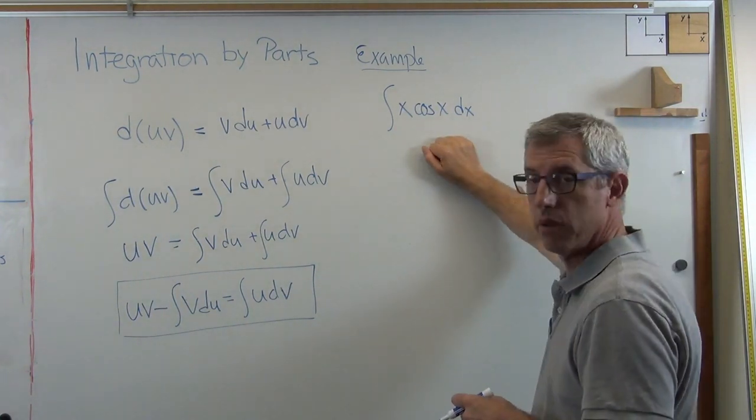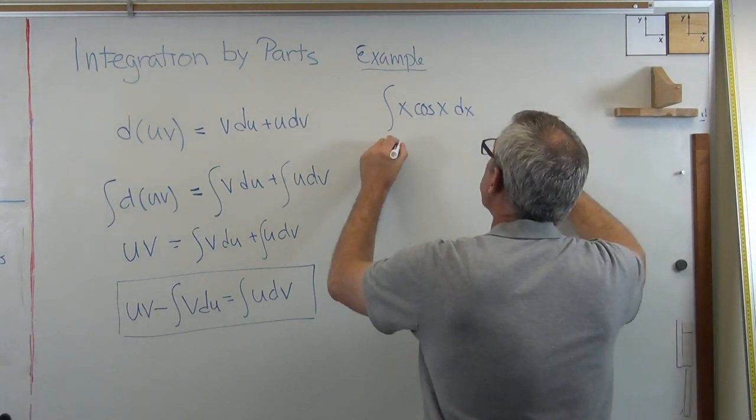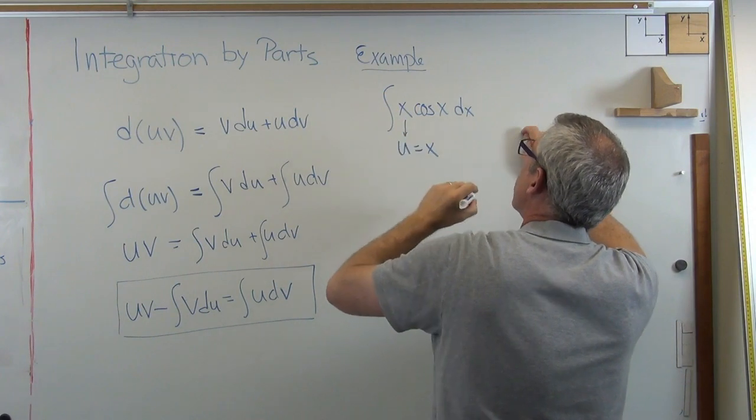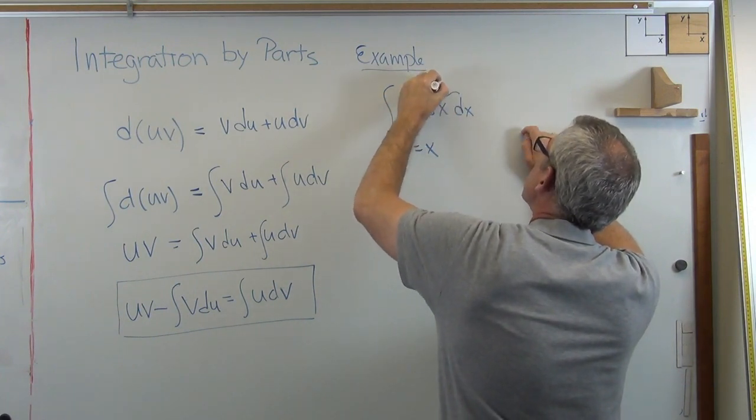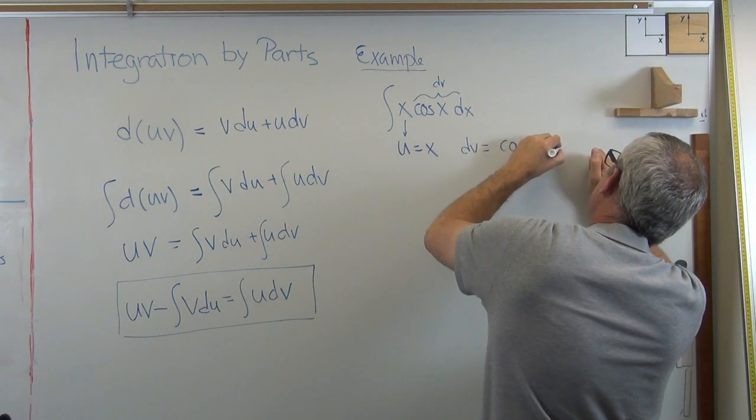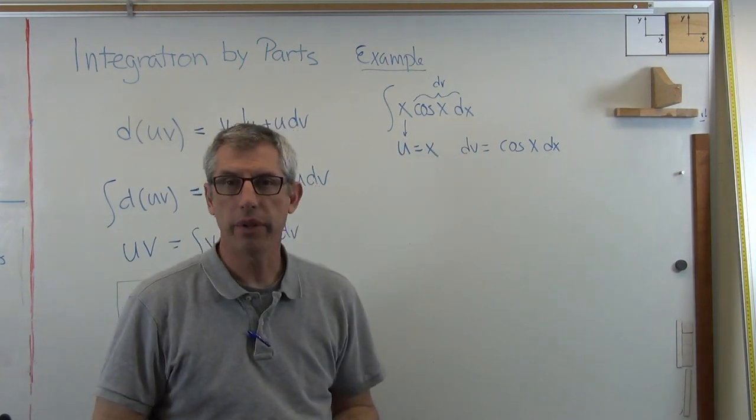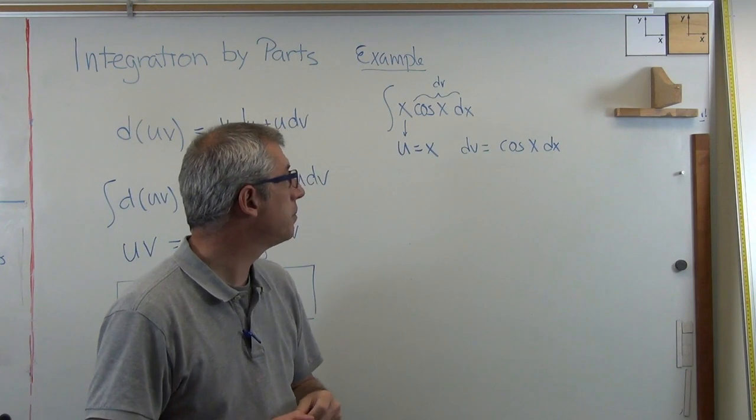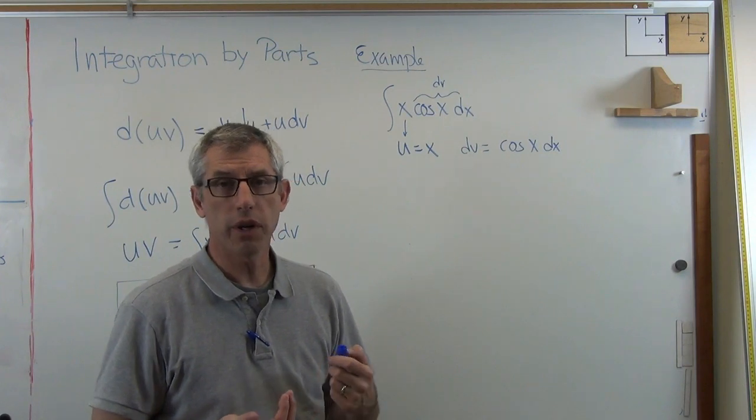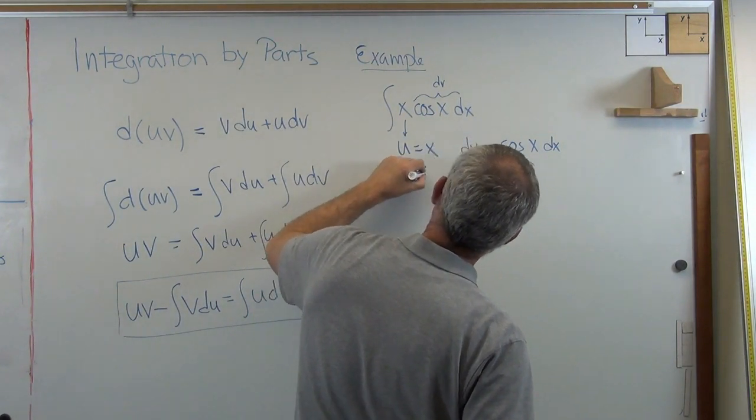If this is going to be solved using integration by parts, what I'm going to have to do is I'm going to have to figure out what's u and what's dv. Well, u equals x. So that's right there. And this part here is going to be dv. So dv equals cosine x dx. So if that's u, then du equals dx. That's easy.